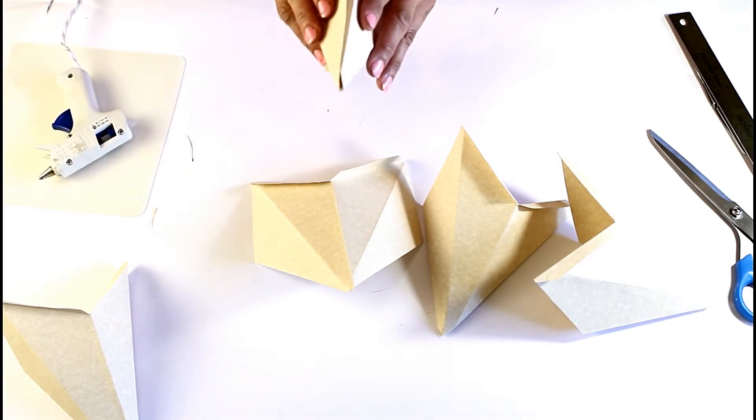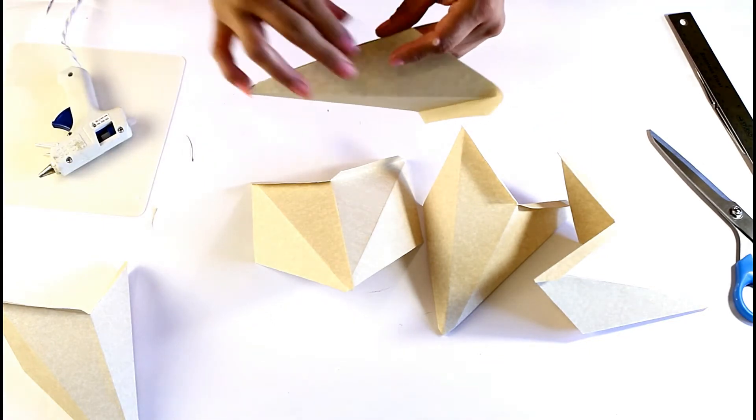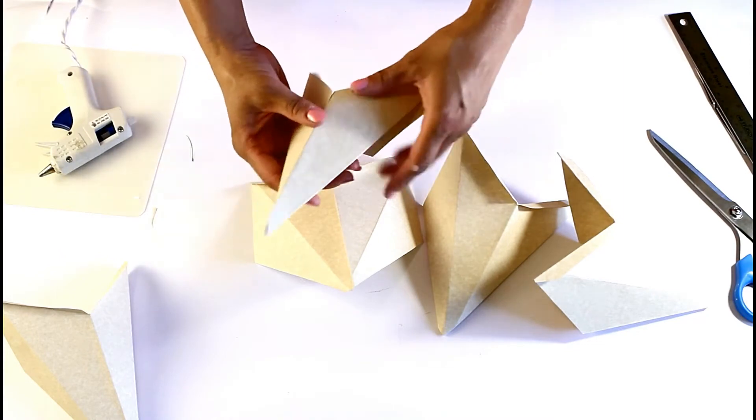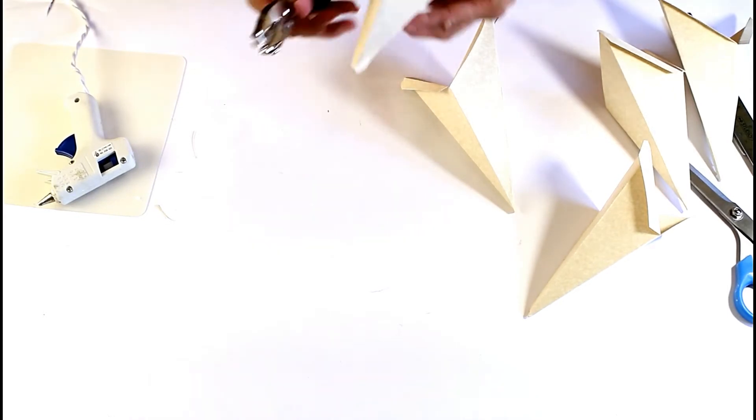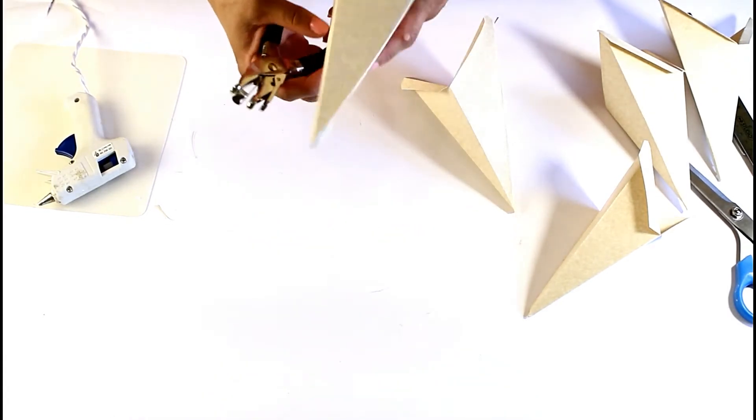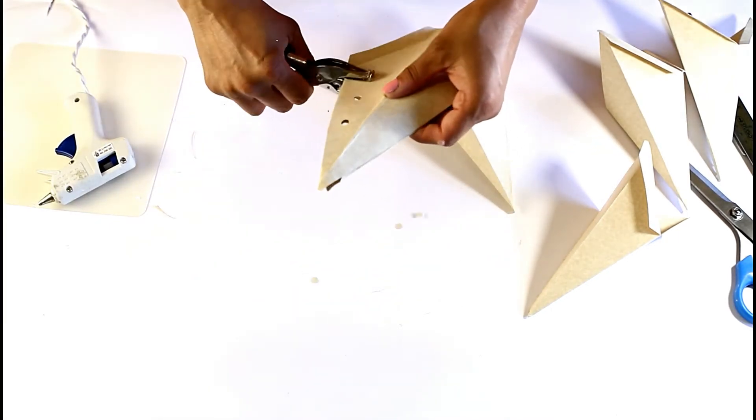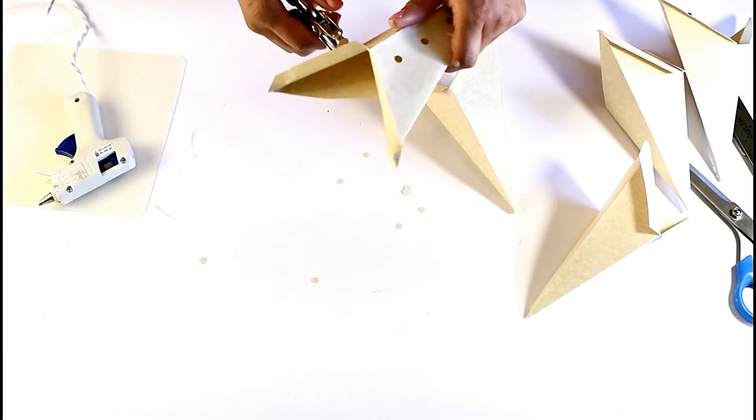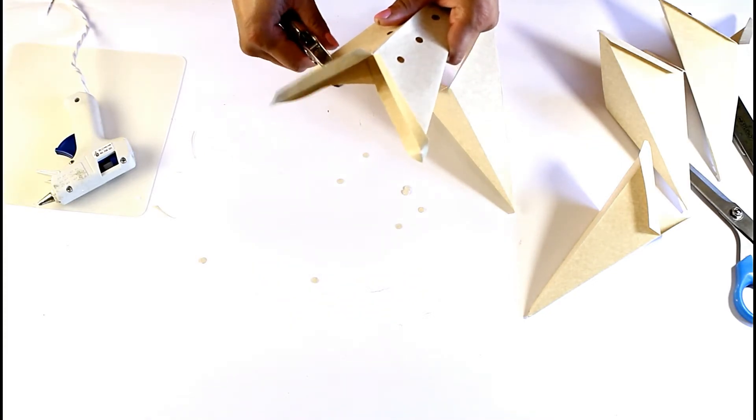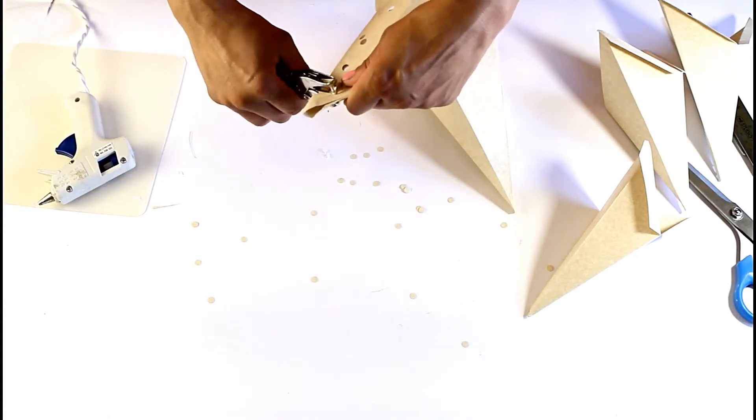I'm going to glue these two ends together. Then what you can do, take your hole puncher or if you have nice punches, just make nice designs and start punching these flaps. I'm doing it rough, you might want to pattern it better, but it's the general idea.